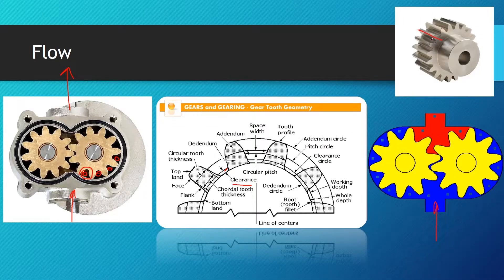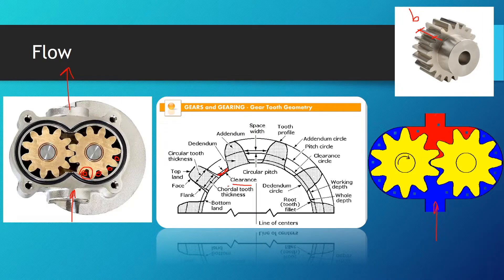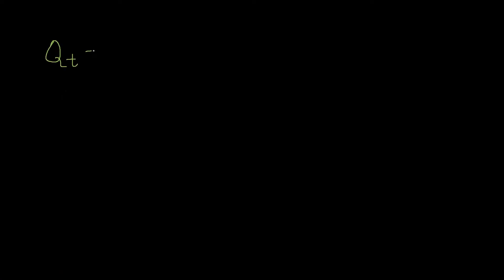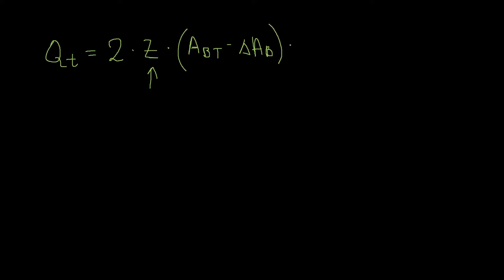So the effective area is the area between teeth minus the clearance area, times the width of the gear b. The equation for theoretical flow is: qt equals 2 times z, where z is the number of teeth and we use 2 because we have two gears in our pump. If there were n gears you would put n times z. Then we multiply by the area between teeth minus the clearance area between teeth, times b.